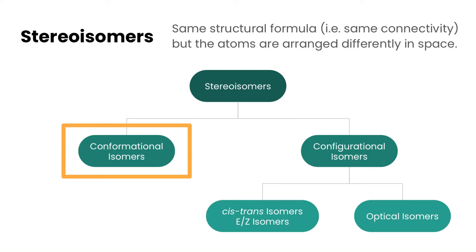In this video, we're going to take a look at some stereoisomers, and specifically we're going to focus on conformational isomers. Before we get into what conformational isomers are, we need to define what stereoisomers are. They are structures that have the same structural formula, so the same connectivity between atoms, but the atoms are arranged differently in space.